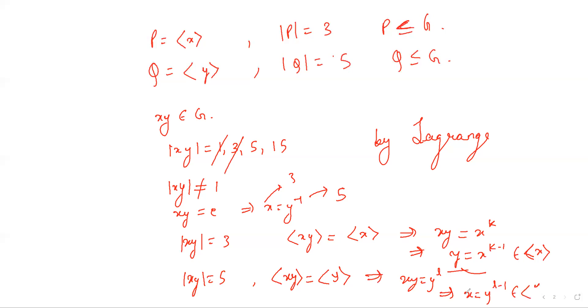which implies x belongs to the group generated by y. But this is again not possible since x has order 3 and any element in the group Q, that is the group generated by y, has order 1 or 5. So 5 is not possible.